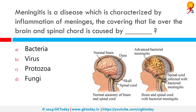Meningitis is a disease characterized by inflammation of the meninges, which is the covering that lies over the brain and spinal cord. It is caused by bacteria. Meningitis is an inflammation of the three membranes that cover the brain and spinal cord. It can occur when fluids surrounding the meninges become infected; the most common causes are viral and bacterial infections.